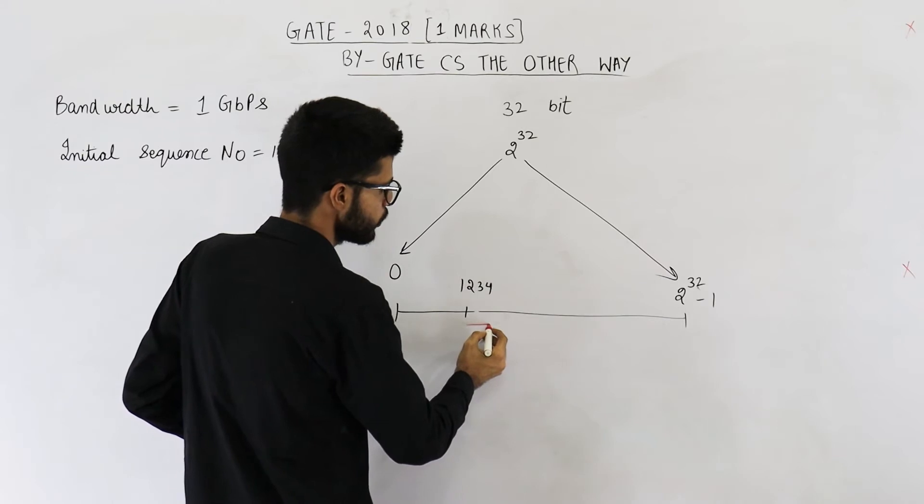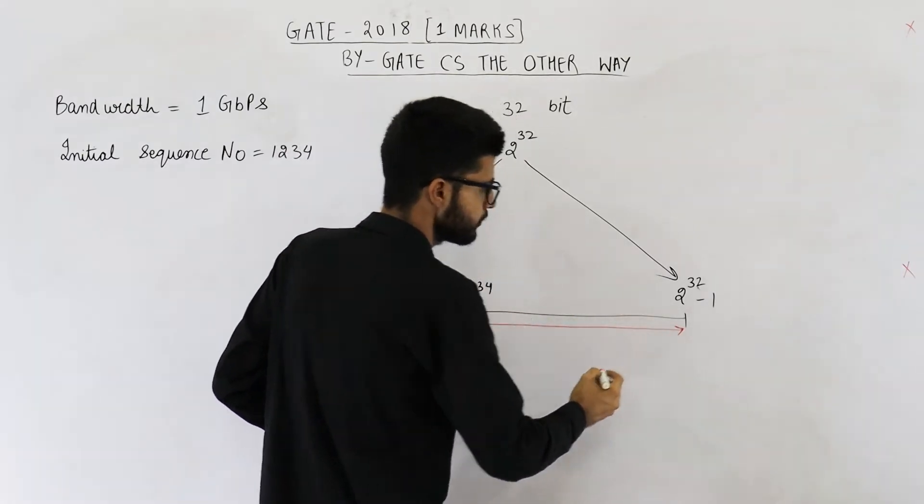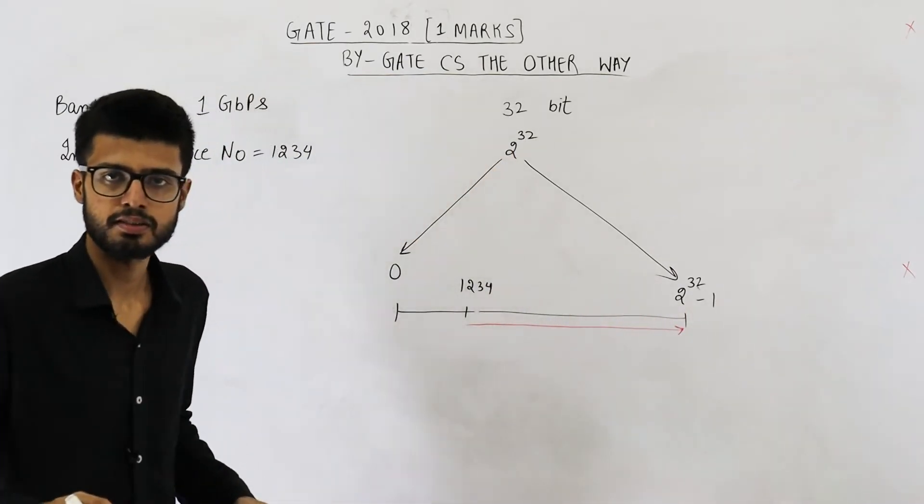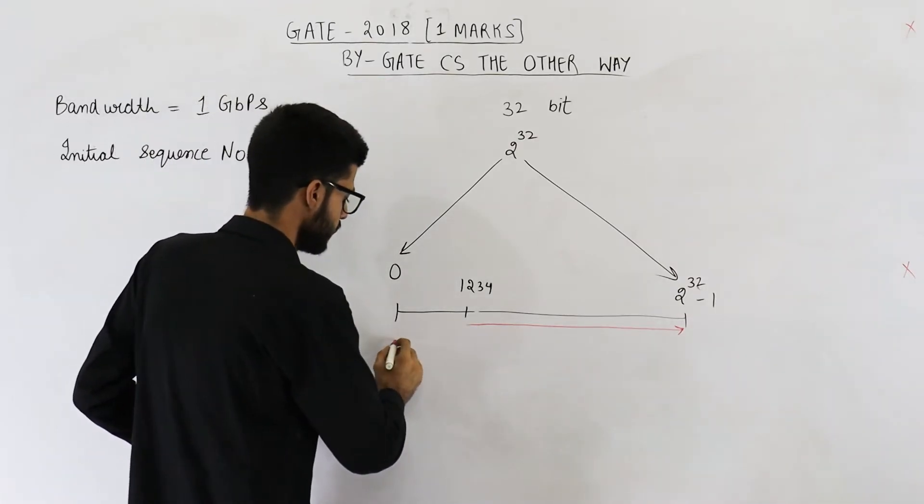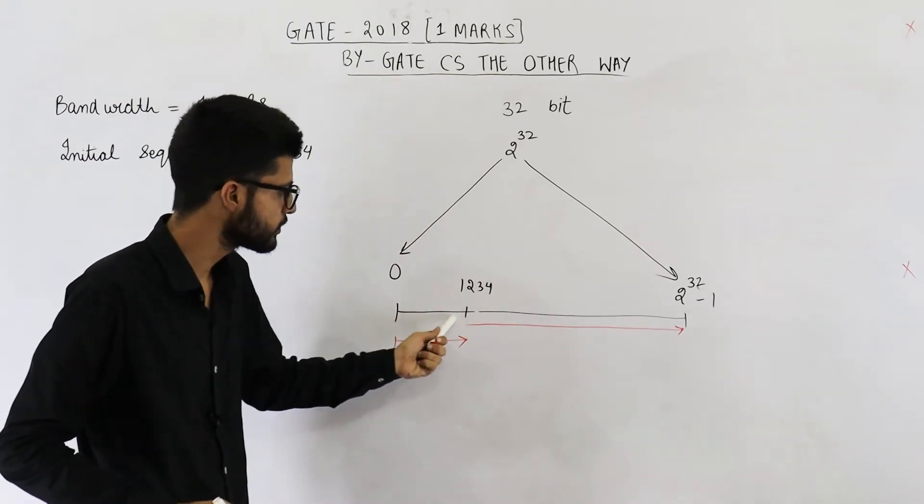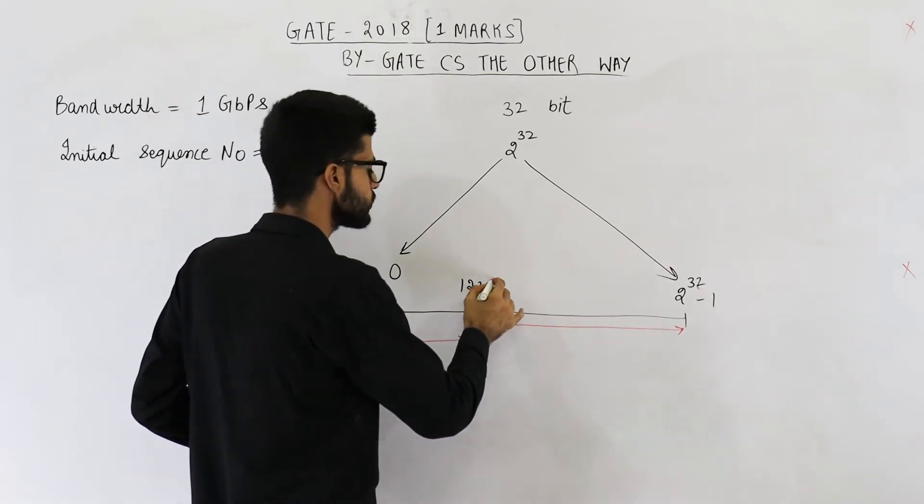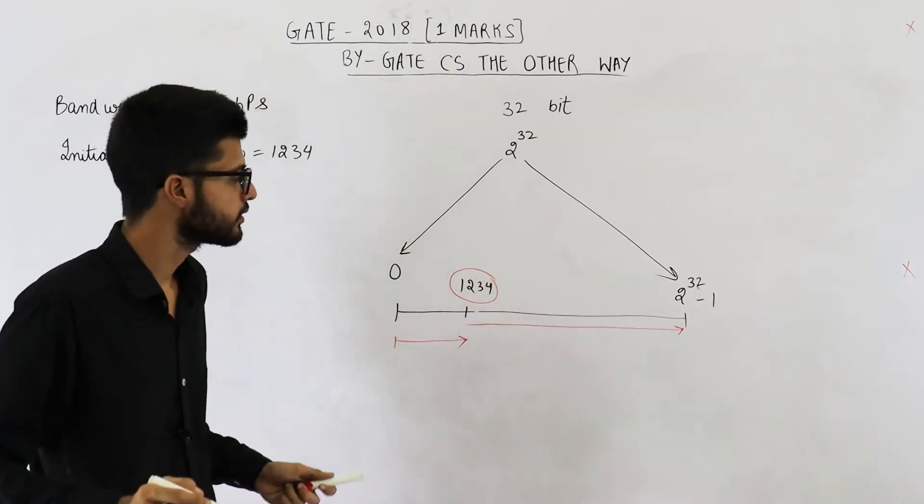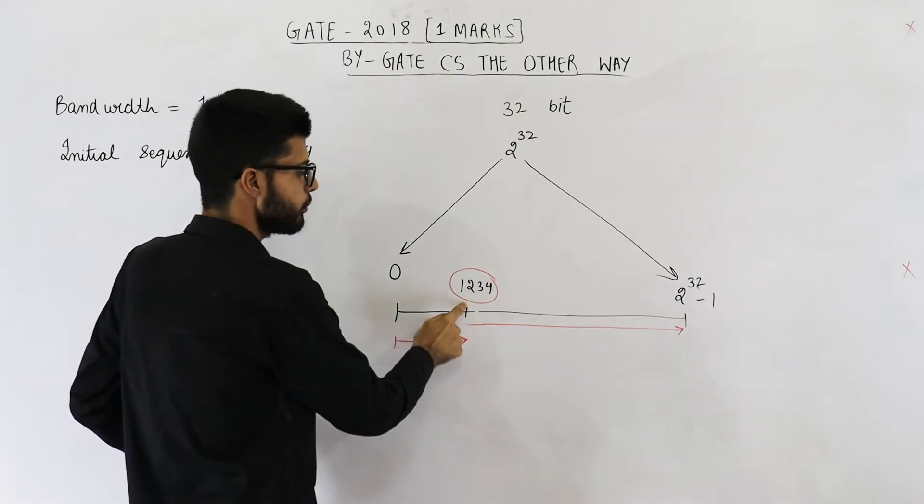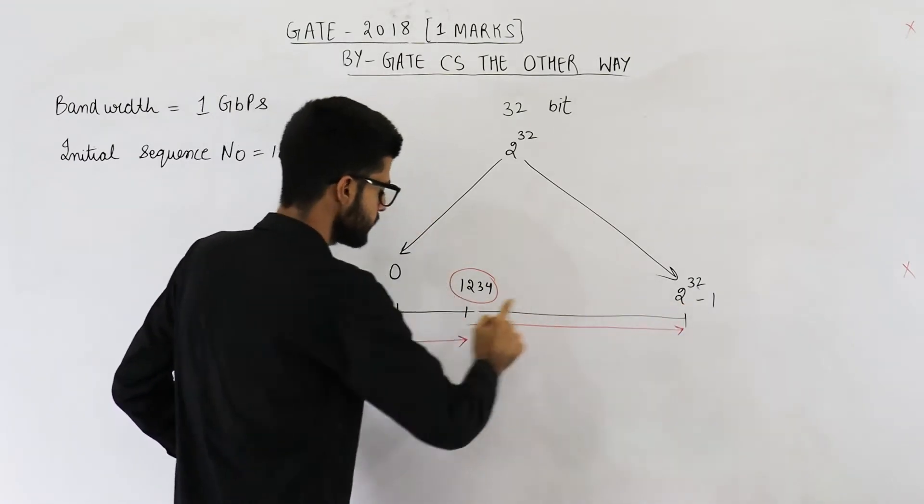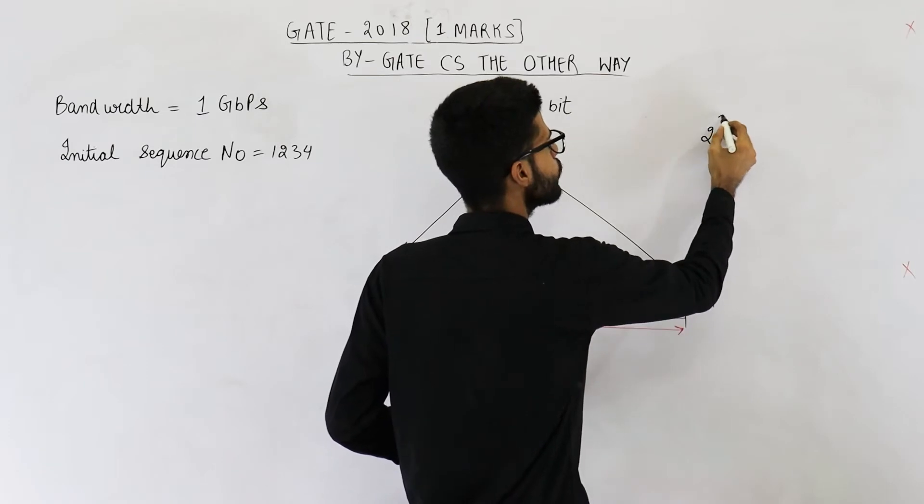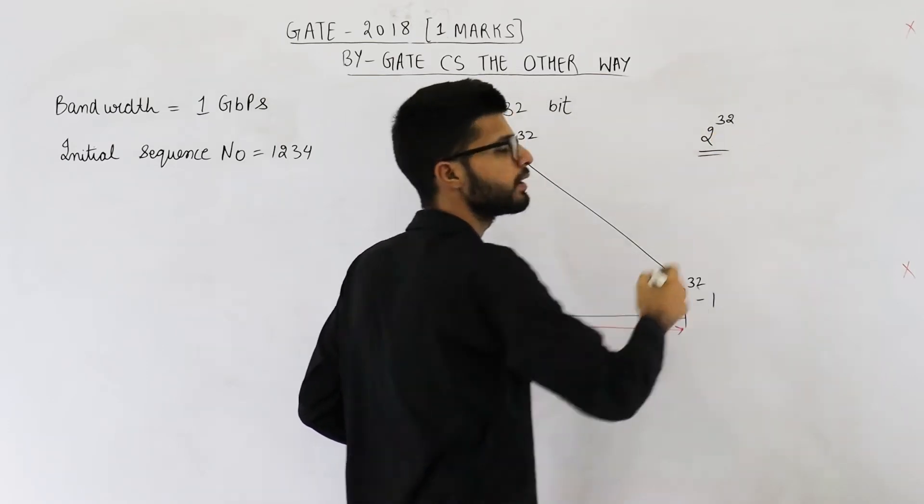Now we are going to use all of these sequence numbers after some time. Bytes will keep on consuming these sequence numbers. After this last sequence number is consumed, we will just wrap around. Again, we will start from 0 only. And after some time, when all of these sequence numbers are also used, we are going to reuse this sequence number. The question is how much time is taken after which this one will be reused. So if you start from here, you will use all the sequence numbers once. That means in simple words, they are asking in how much time all the 2 raised to the power 32 sequence numbers will be consumed.